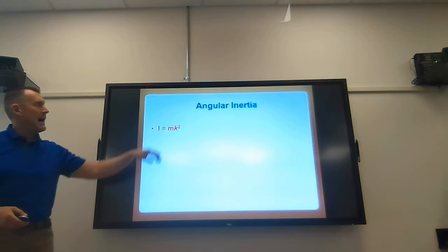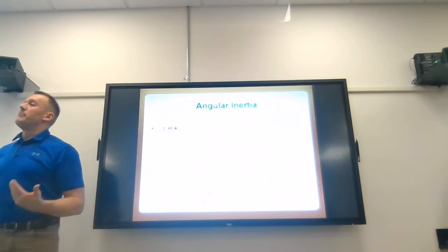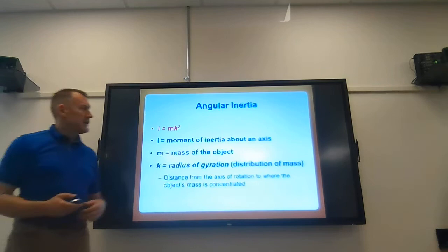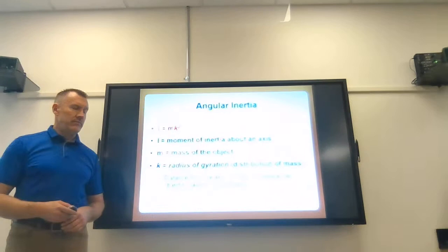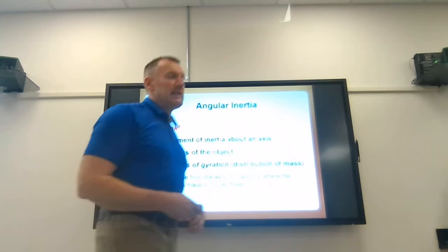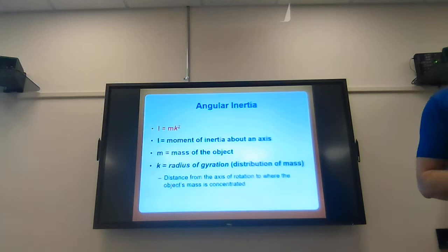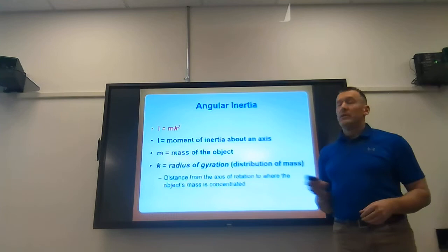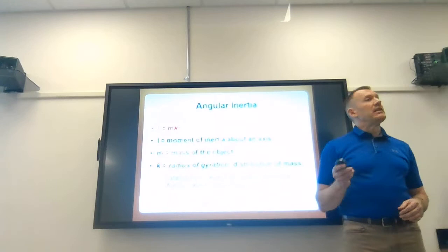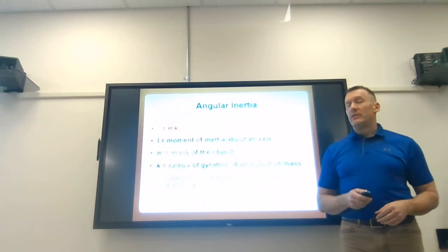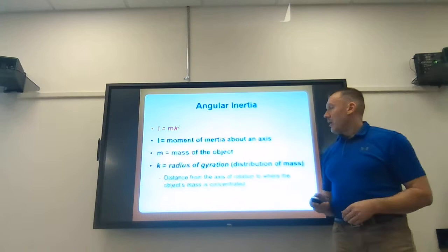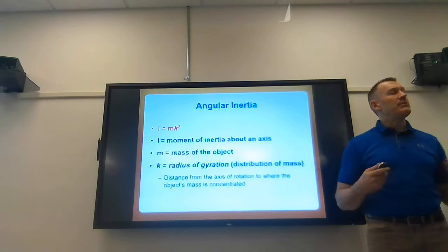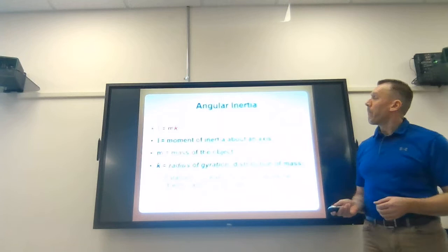Angular inertia, capital I, is equal to mass multiplied by the distribution of mass squared. The distribution of mass is referred to as the radius of gyration, k, and it is squared. Based on that formula, the distribution of mass is the more important factor. If we double the radius of gyration, that increases angular inertia by four-fold - because the radius of gyration is squared. We define radius of gyration as the distance from the axis of rotation to where the object's mass is most concentrated.